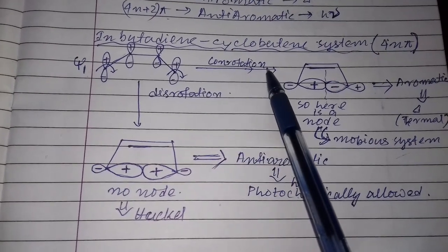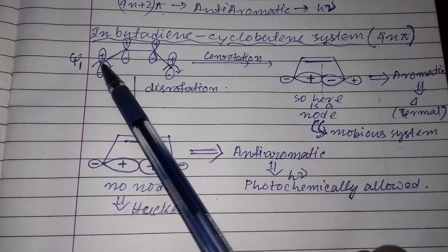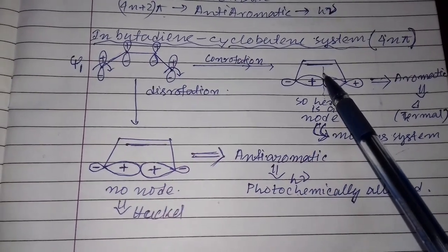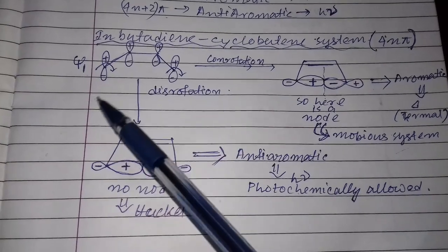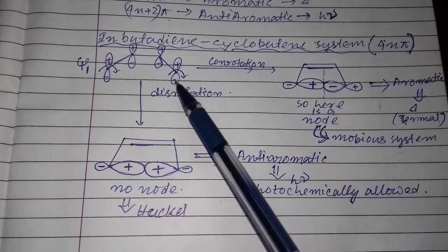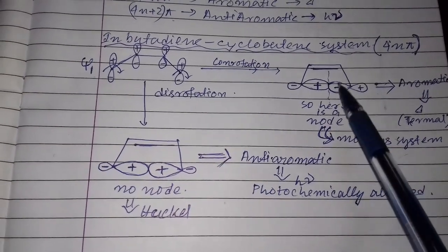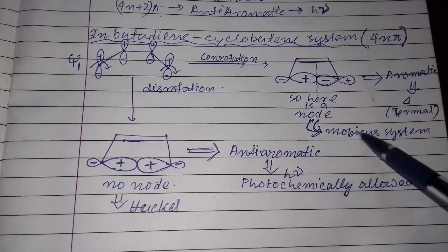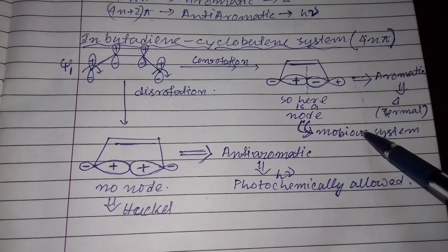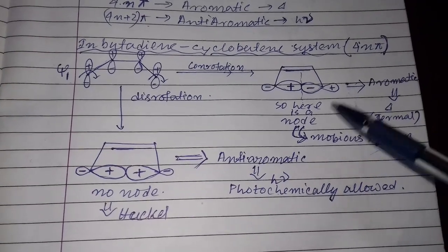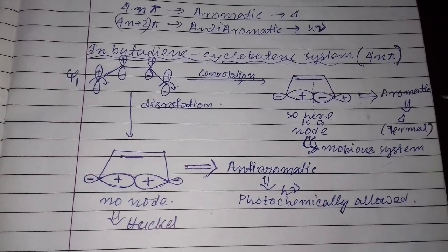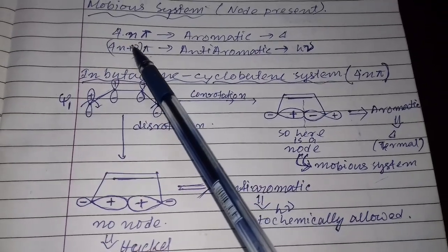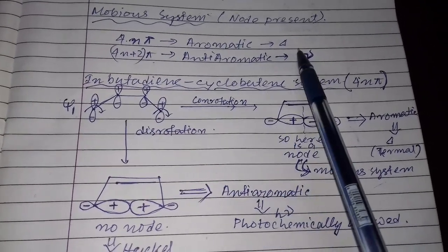If we carry out the conrotatory process, the orbitals will move in the same direction. In the product cyclobutene, we see that the positive lobe comes to one side and the negative lobe to the other, so one node is present. This makes it a Möbius system.